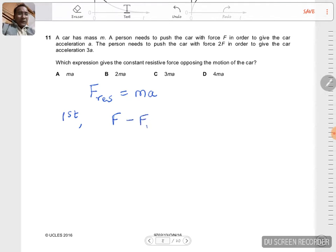And in the second case, the force now is 2F. So 2F minus F_res is equal to, this time, M times 3A.